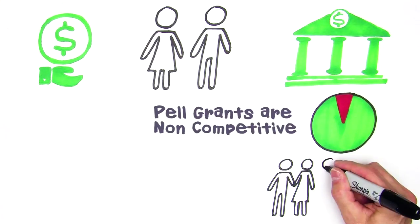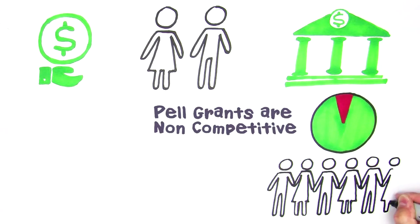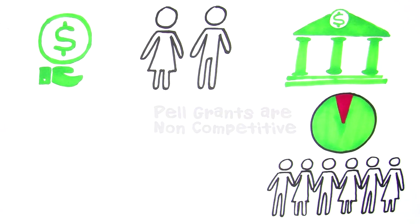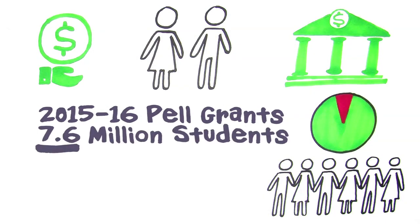Pell Grants are non-competitive. Undergraduates who meet the income requirements and who are enrolled in a school participating in the program are eligible. In the academic year 2015-2016, 7.6 million students received Pell Grants.